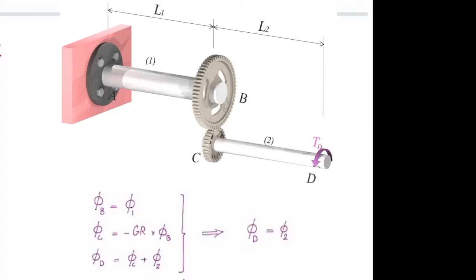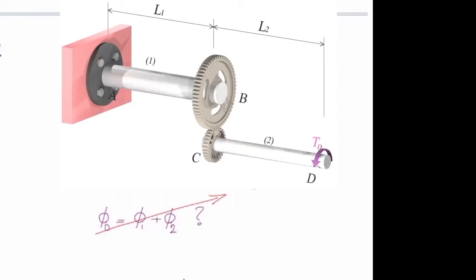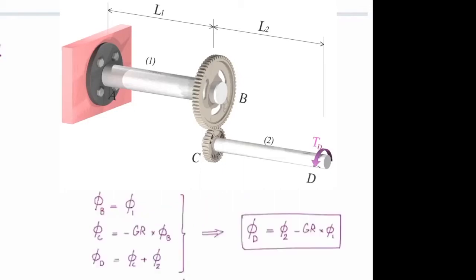Phi at D is equal to phi 2 minus gear ratio times phi 1. So this is how we can determine twist in gear assemblies. Now compare this equation with this one. So it is not phi 1 plus phi 2. I have to take care of the gear ratio, which changes the twist when we move from one gear to another gear. Does that make sense?